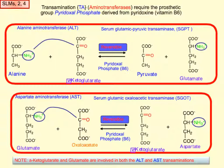A closer look at the transamination reaction shows it requires a prosthetic group: vitamin B6, also known as pyridoxal phosphate. Alanine and alpha-ketoglutarate, in this reversible reaction with pyridoxal phosphate, produce pyruvate and glutamate. The direction of the reaction depends on the relative abundance of each substrate, but typically we go from alanine and alpha-ketoglutarate to pyruvate and glutamate.